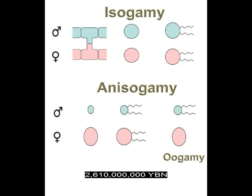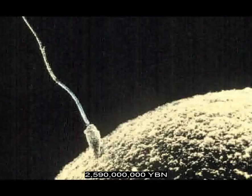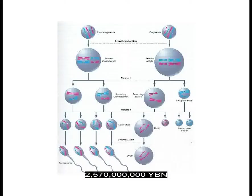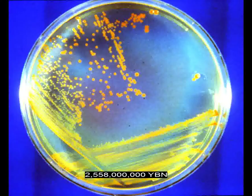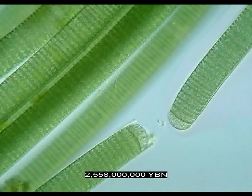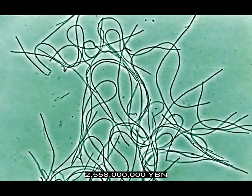Gender in eukaryotes evolves — anisogamy: sex cell and nucleus fusion between two cells that are different in size or shape. Oogamy, a form of anisogamy, evolves in protists — sex between a flagellated gamete and an unflagellated gamete. Two-step meiosis: diploid DNA copies and then the cell divides twice into four haploid cells. Eubacteria Deinococcus-Thermus. Eubacteria Cyanobacteria — ancestor of all plastids. Eubacteria Chloroflexi — green non-sulfur bacteria.